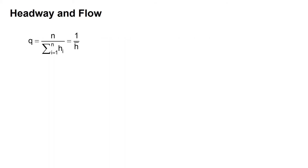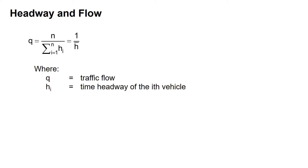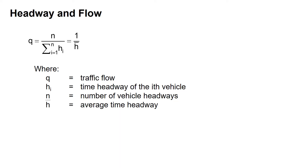We can also relate headway to flow. Traffic flow Q equals N, the number of vehicle headways, divided by the summation of time headways, which is also equal to one divided by h-bar, the average time headway. So Q equals one divided by the average time headway.